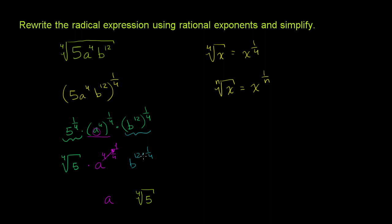And then we have b to the 12th times 1/4th power. Well, 12 times 1/4th is just 3. So that's b to the 3rd power. So it's a b to the 3rd power times the 4th root of 5.